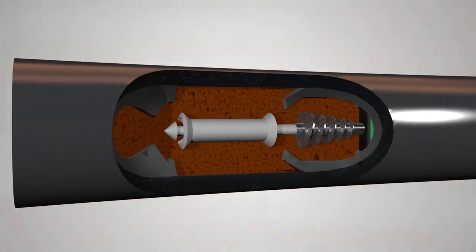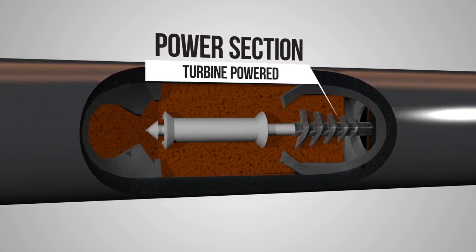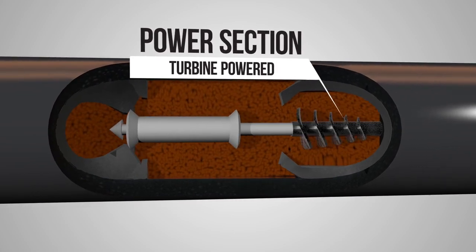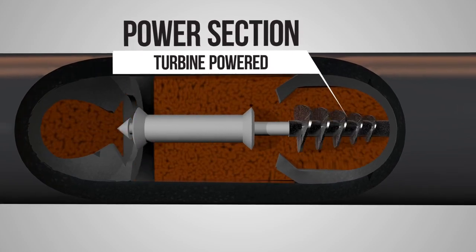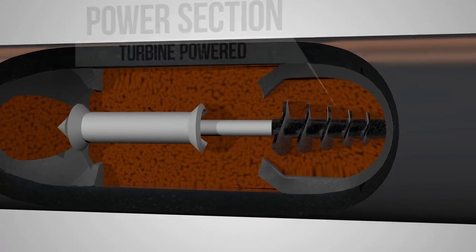In addition to the sensor package and telemetry sections, there is a power section in the tool to power the instrument. The power section is typically battery or turbine powered, sourcing power as drilling fluid is pumped through the turbines in the tool.